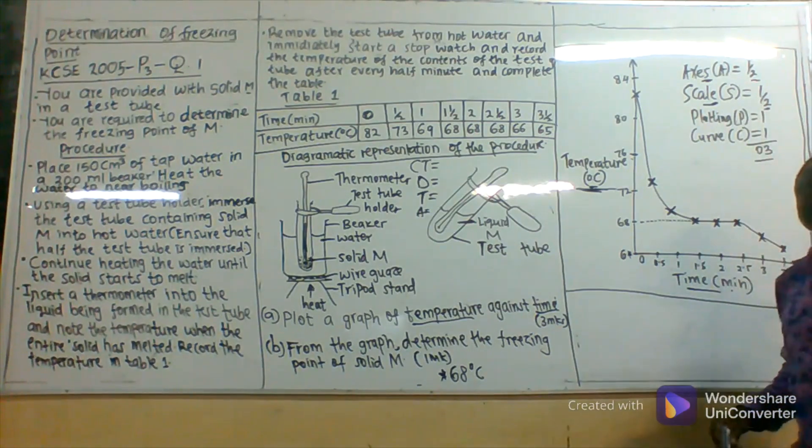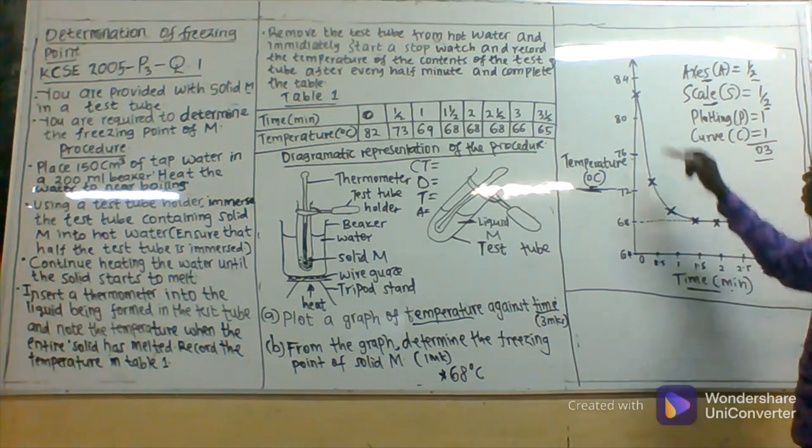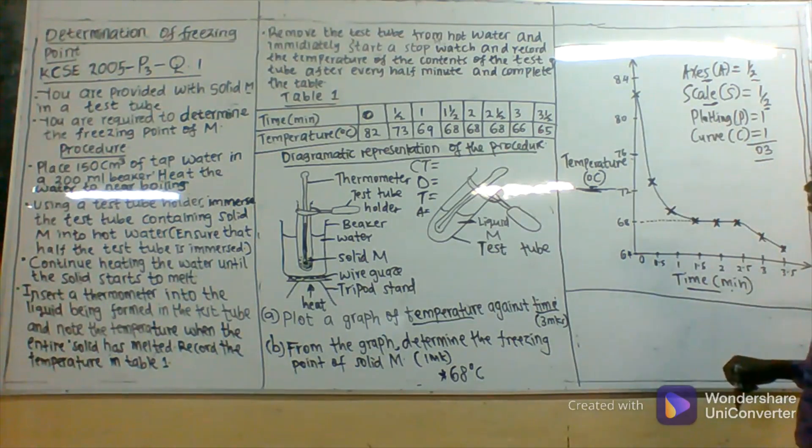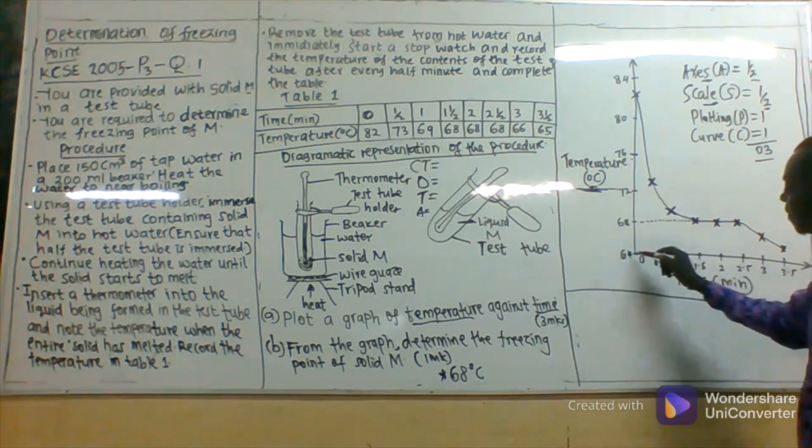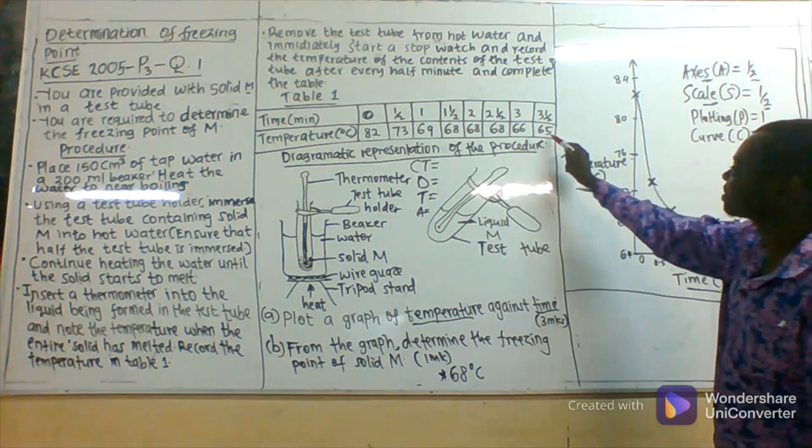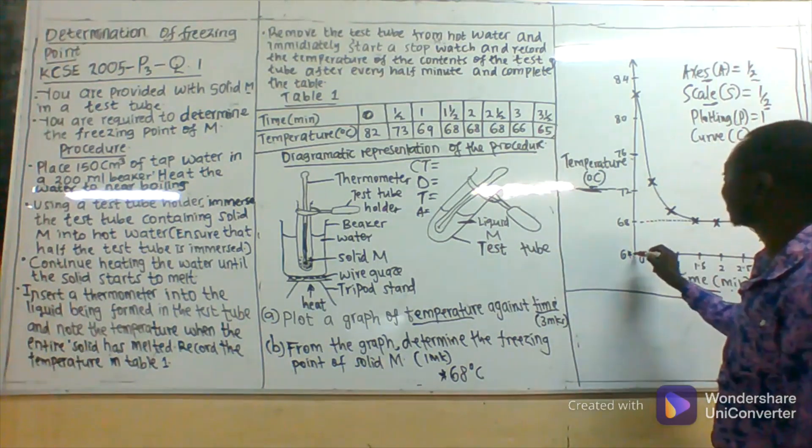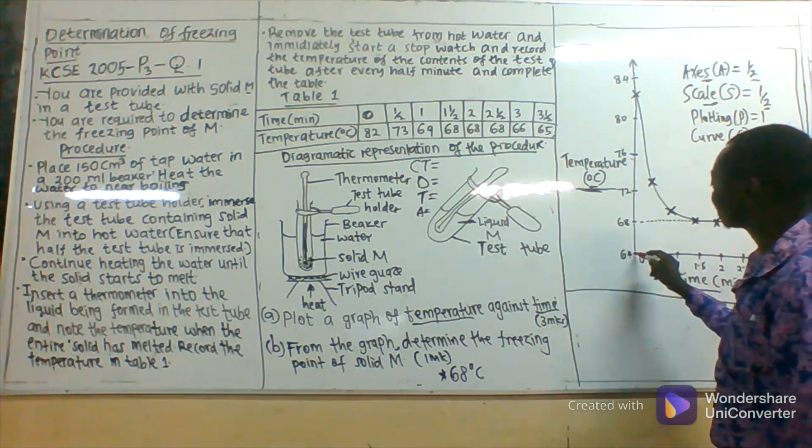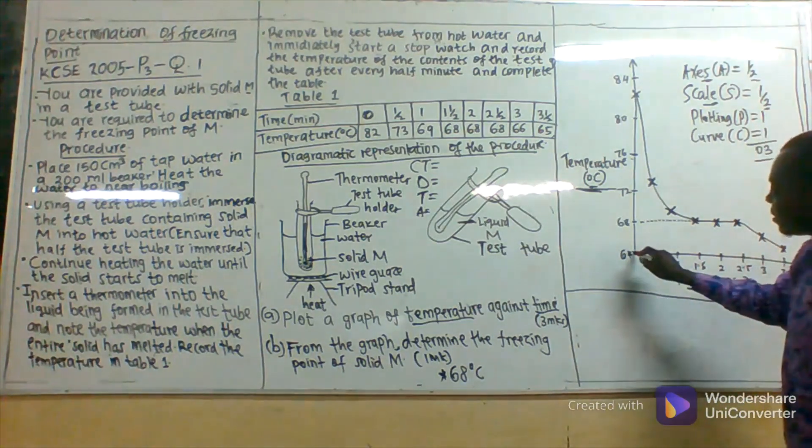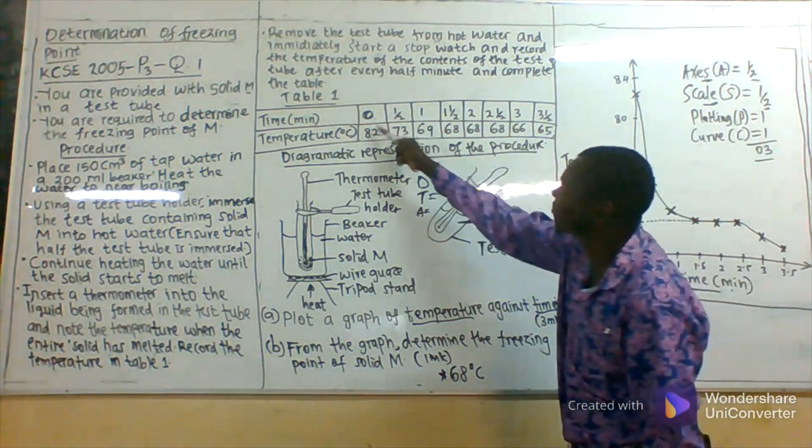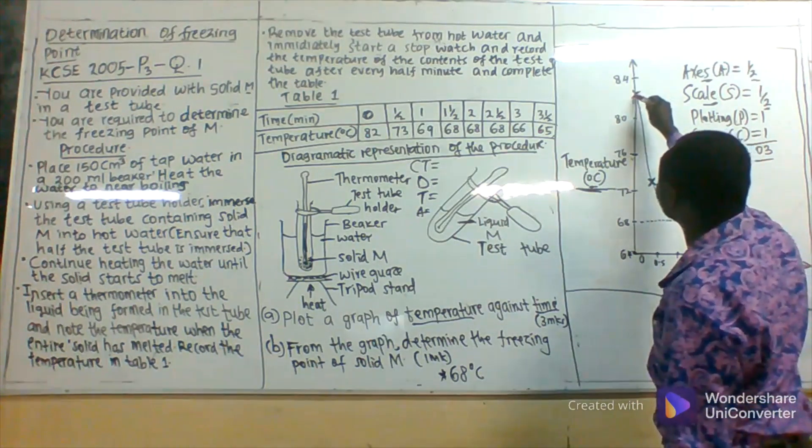Let me start by talking about the Y axis, that is the axis for which temperature had been placed. Looking at the values we have for temperature, the lowest value for temperature is 65. So if we start from zero for temperature, chances are very high that our plot might end up here. So to avoid that, we started with 64 as our lowest temperature. Then for time, we started at zero. When the time was zero, the temperature was at 82.